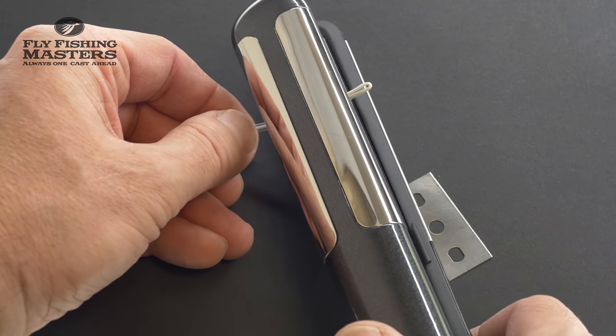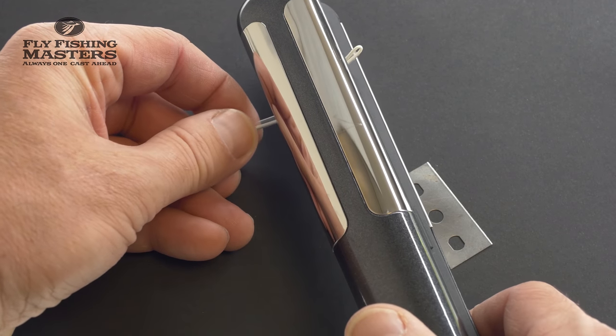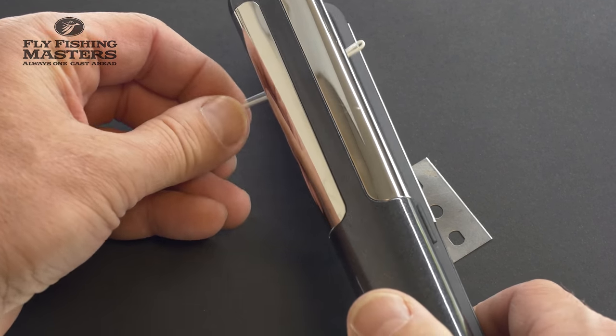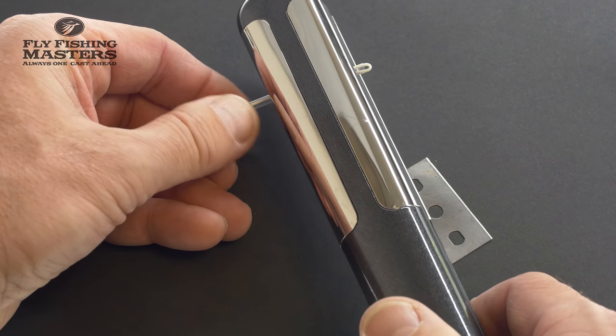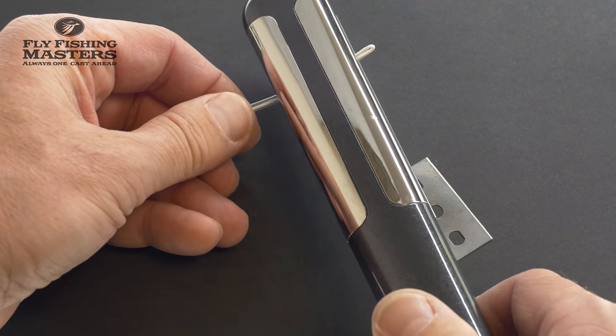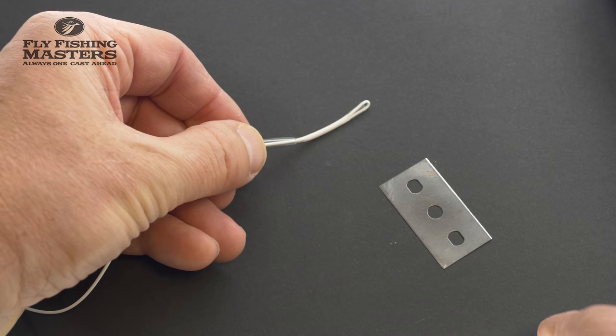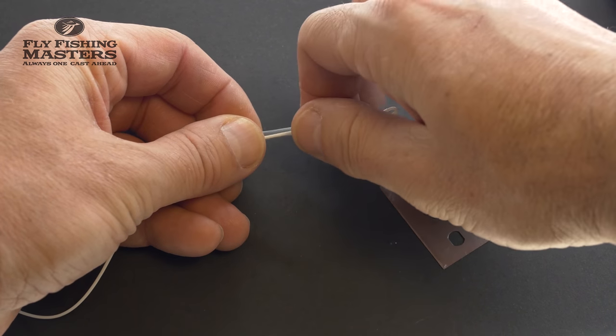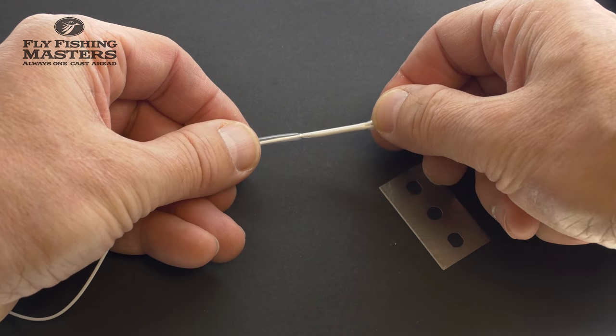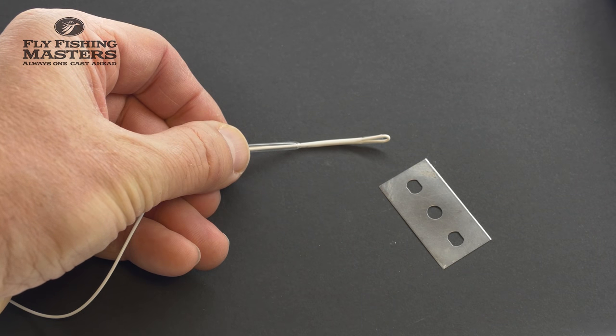We take our hair straightener and attach heat all around the fly line, so we spin it around and open and close the hair straightener. This only takes a couple of seconds as you can see. This will melt the coating on the fly line. There we go, now we wait a couple of seconds.